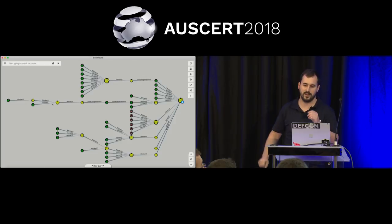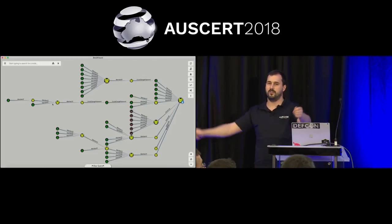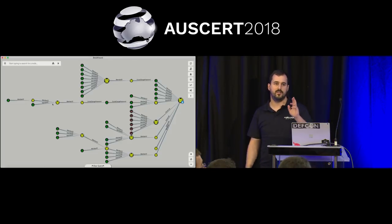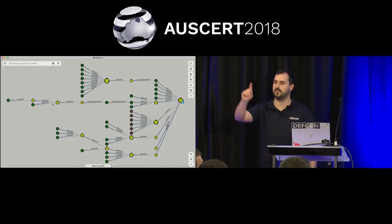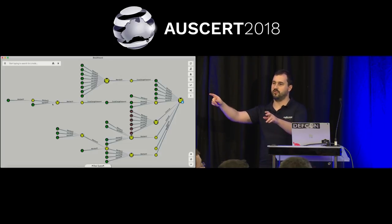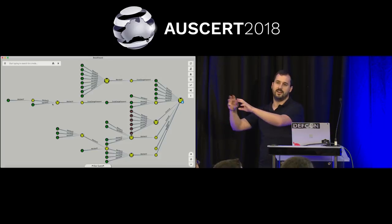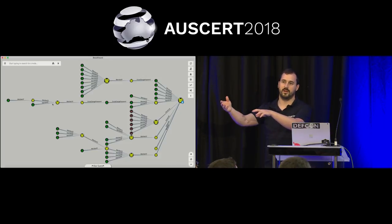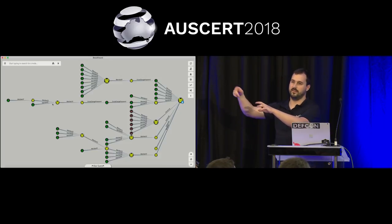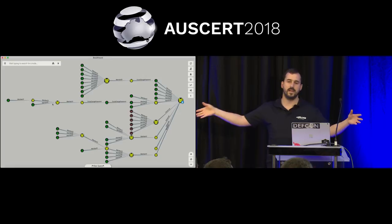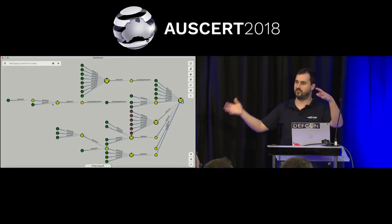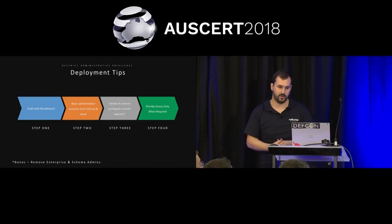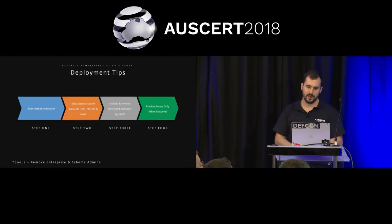Bloodhound shows you attack paths — for example, if you need to get to domain administrator, you might need to attack a particular user in finance who has access to a group or machine, jump onto that machine where a domain administrative account is logged on, and steal their session. You can build up amazing charts about how your privileged access model is performing.